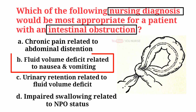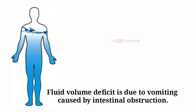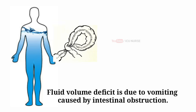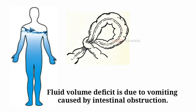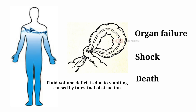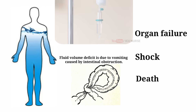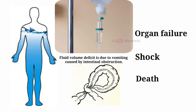And the correct answer is B. Fluid volume deficit related to nausea and vomiting. Fluid volume deficit is a dangerous complication of intestinal obstruction which can lead to organ failure, shock, and death. Treating dehydration is important, and IV fluids may be started to correct electrolyte imbalance.